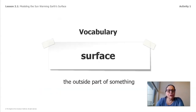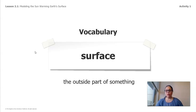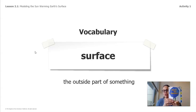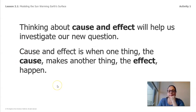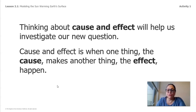Our vocabulary word for today is surface. Surface is the outside of something. For example, the outside of a bug is the surface. Now, thinking about cause and effect will help us investigate our new question. Cause and effect is when one thing — the cause — makes another thing — the effect — happen.